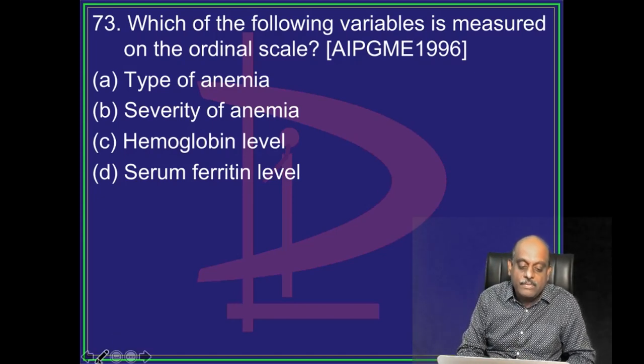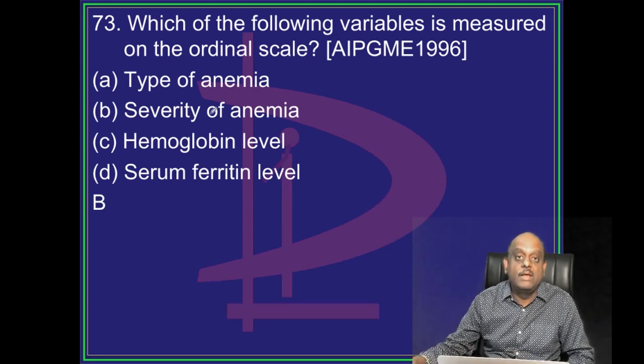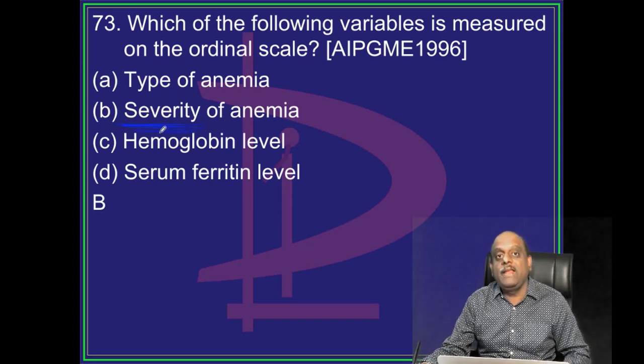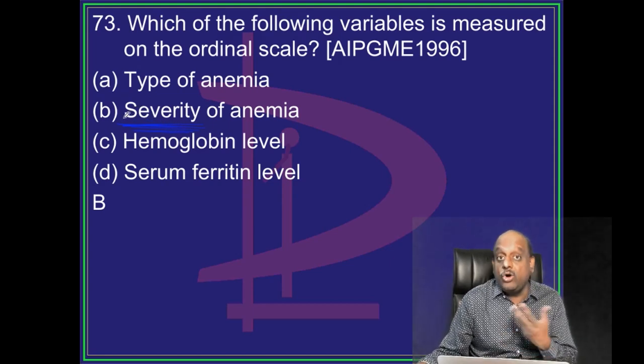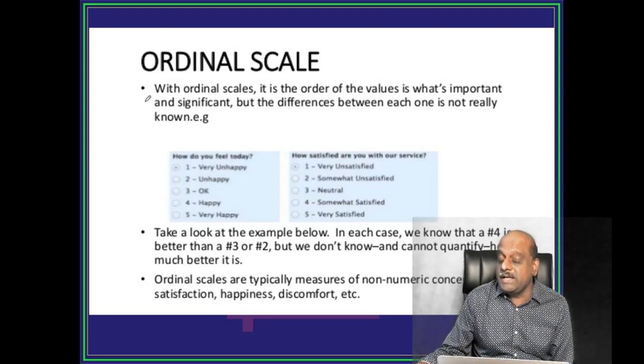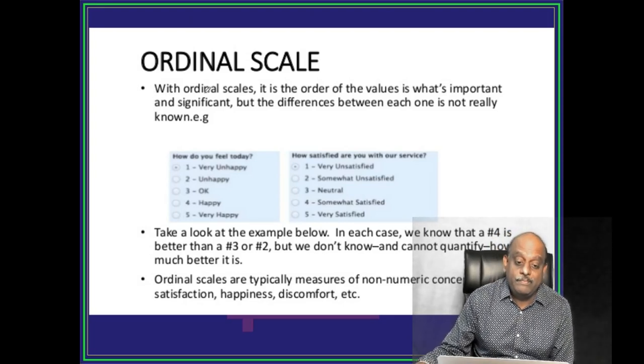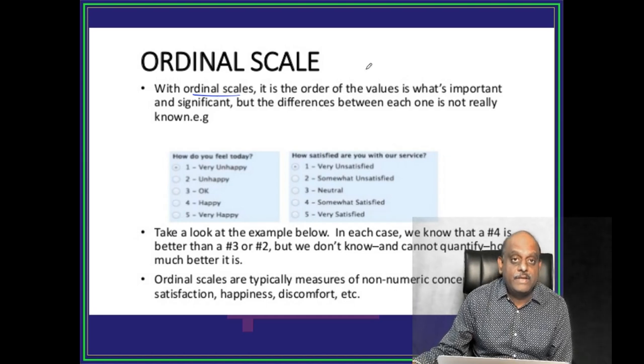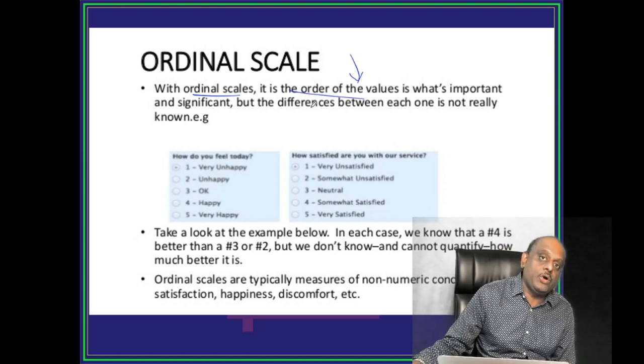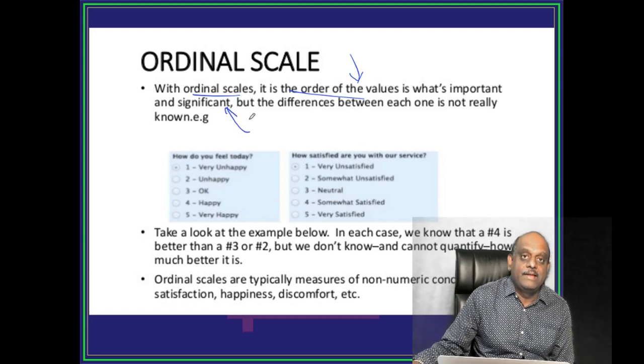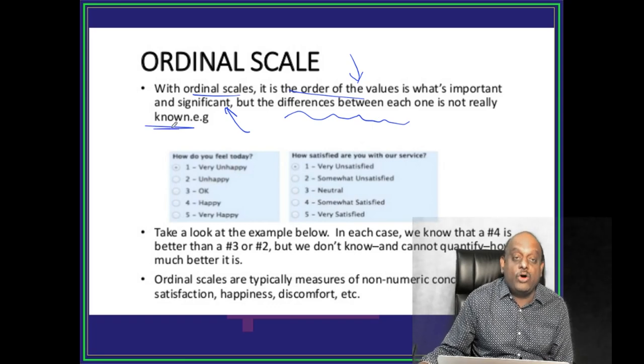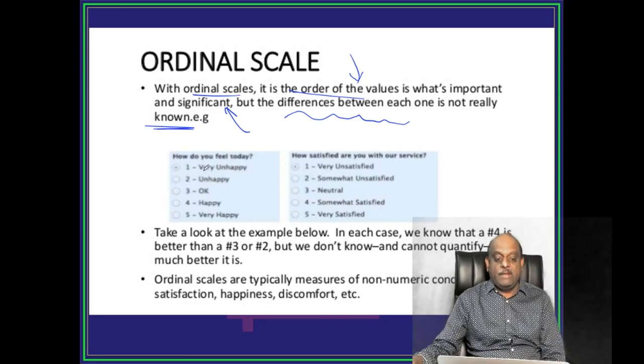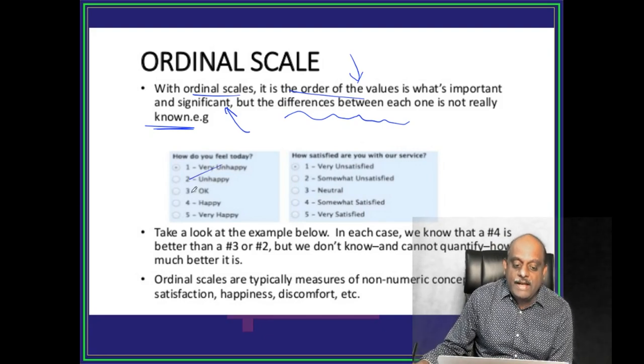Which variable is measured in an ordinal scale? It is the severity of anemia, which is being measured in the ordinal scale. What is the order of the values which is important and significant? But the difference between one order and the other order is not really meaningful. For example, you have the data: very unhappy, unhappy, okay, happy, very happy.